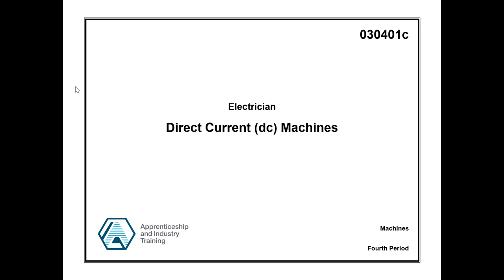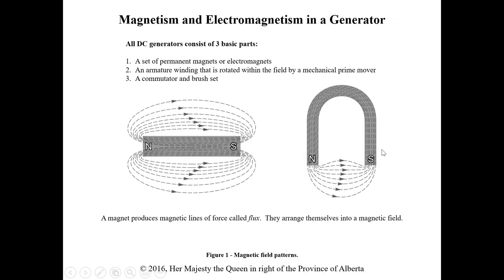I'm going to go through the first half of DC machines — this will be the DC generators portion. The second video will cover motors. We broke down the ILM quiz into these two sections to keep them separate. First, I want to review theory on magnetism and electromagnetism, because our field winding is created by an electromagnet. We want to understand the difference between an electromagnet and permanent magnets so we can see that we can vary that electromagnet.